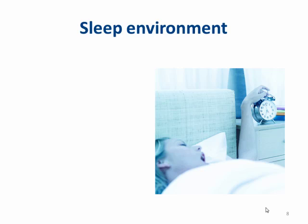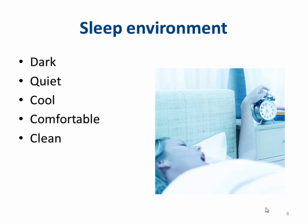Your sleep environment should have characteristics that make it easier for you to fall and stay asleep. The room should be dark, quiet, cool, comfortable, and clean. Eye shades, blackout curtains, earplugs, and white noise can reduce disruptions from lights or sounds that you can't eliminate.